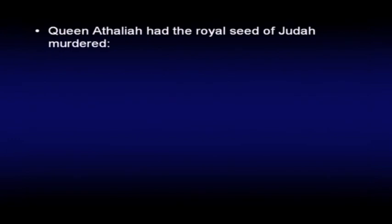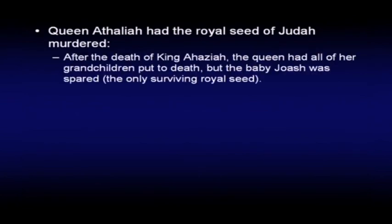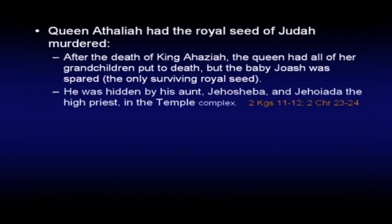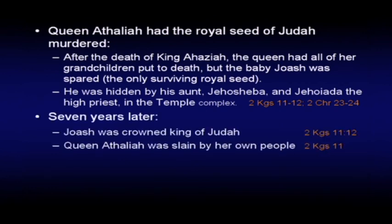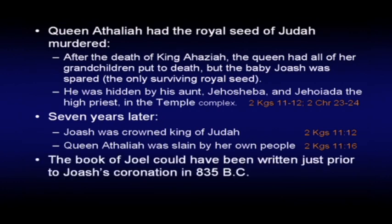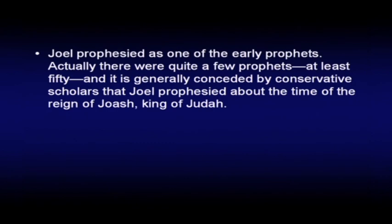Queen Athaliah had the royal seed of Judah murdered. After the death of King Ahaziah, the queen had all of her grandchildren put to death. But the baby Joash was spared — the only surviving royal seed. He was hidden by his aunt Jehoshabah and Jehoiada the high priest in the temple complex. Seven years later, Joash was crowned king of Judah, and Queen Athaliah was slain by her own people. This is all in 2 Kings 11. It's suggestive that the book of Joel could have been written just prior to Joash's coronation in 835 B.C. — and Joel prophesied as one of the early prophets, for sure.